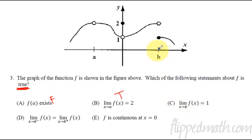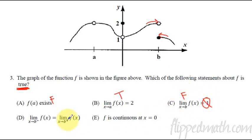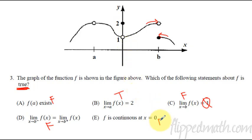The limit as x approaches b equals 1 — no, because the limit from the left is different from the limit on the right. Since they're not approaching the same value, the limit doesn't exist, so that's false. Letter d is the same situation, also false. And f is continuous at x equals zero — at x equals zero it is not continuous; you'd have to lift your pencil. So that's also false. Our answer is b: the limit as x approaches a equals two.